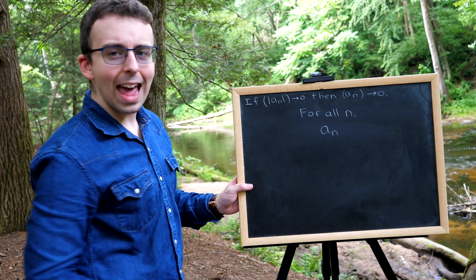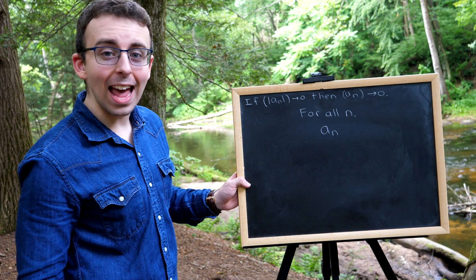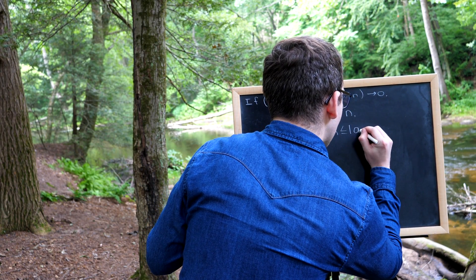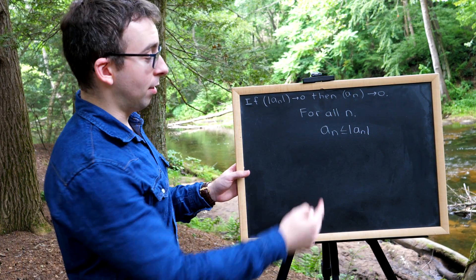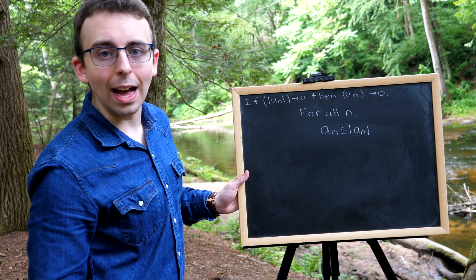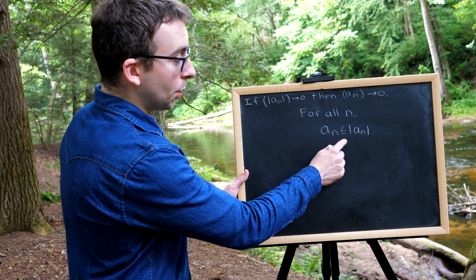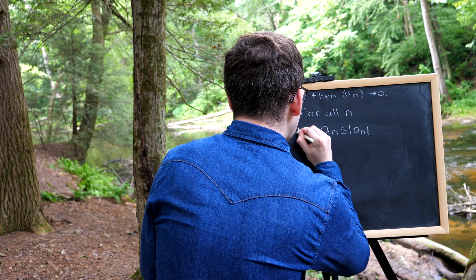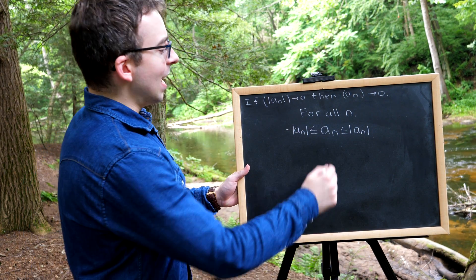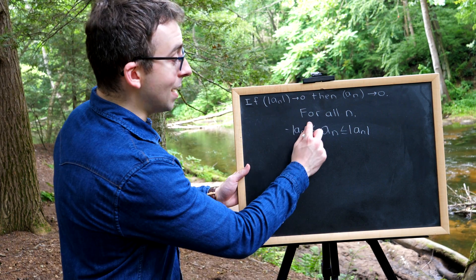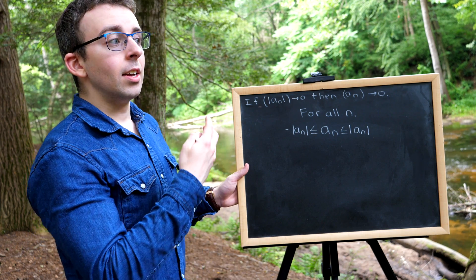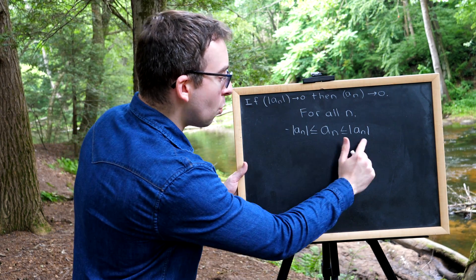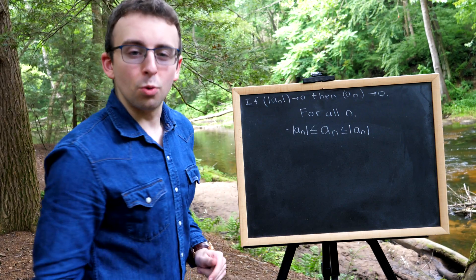For all n, what can we squeeze terms of our sequence a_n between? Well, certainly every term a_n is less than or equal to the absolute value of a_n, because if a_n is negative, then it will be less than its absolute value, and if a_n is non-negative, then it will equal its absolute value. Similarly, every term a_n is greater than or equal to the negative of its magnitude. If a_n is positive, then it will be greater than the negative of its magnitude, and if it is negative or 0, then it will equal the negative of its magnitude. So we've got a_n squeezed between two sequences.